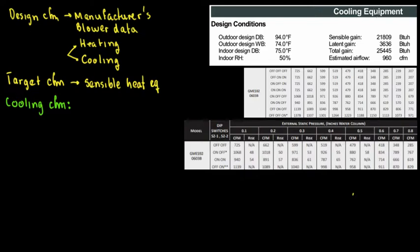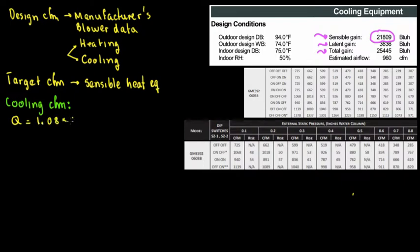So for cooling, we have sensible, latent, and total heat values. The cooling CFM is determined by the sensible heat equation: Q equals 1.08 times CFM times delta T.